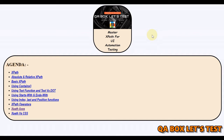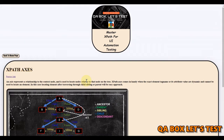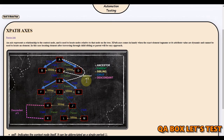In the first video on XPath introduction, we talked about nodes having relationships. We are now going to take advantage of this relationship to identify our elements so that we can interact with them. An axis represents a relationship to the context node and is used to locate nodes relative to that node on the tree. XPath axes come in handy when the exact element tag name or its attribute value are very dynamic. In this case, locating an element by traversing through child, sibling, or parent is our approach.